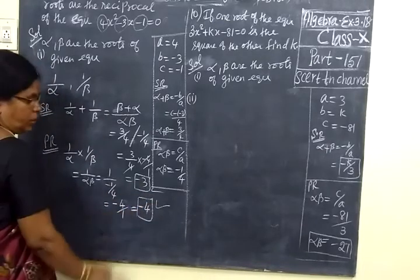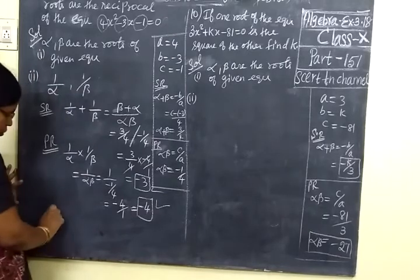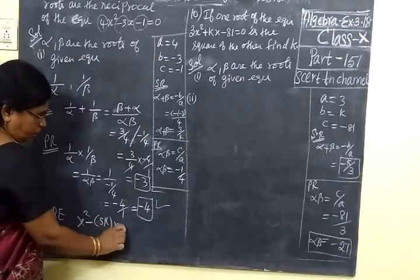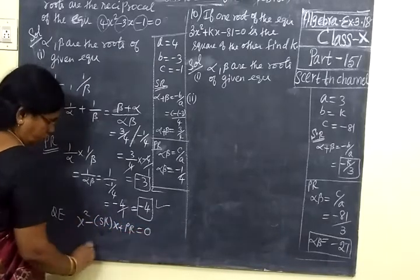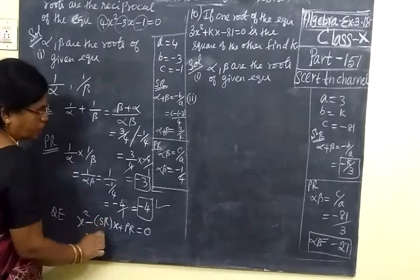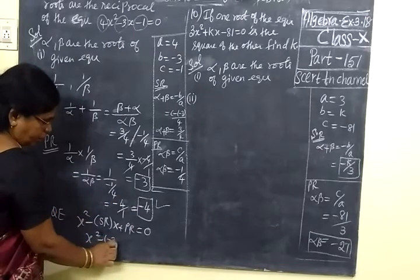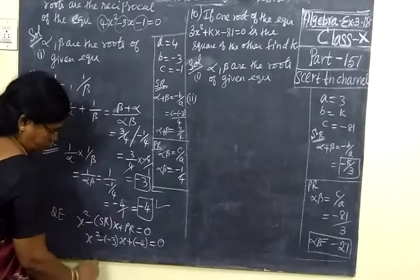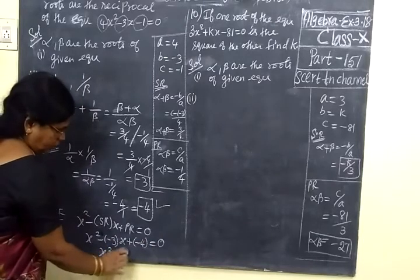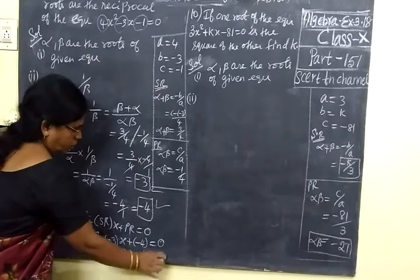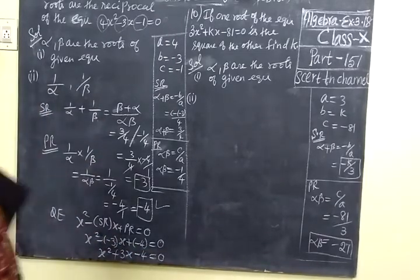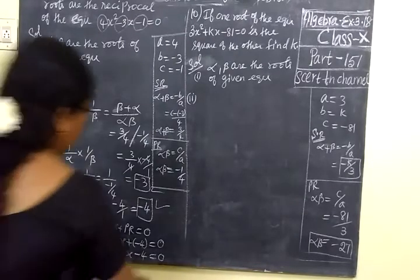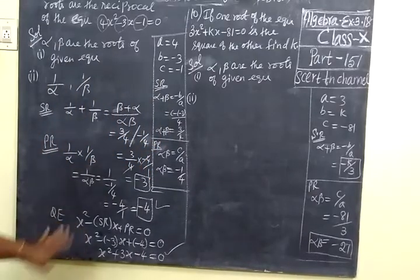Sum of the roots is minus 3, product of the roots is minus 4. Using the general quadratic formula: x squared minus (sum of roots)x plus (product of roots) equal to 0. Substituting gives x squared minus minus 3x plus minus 4 equal to 0, which simplifies to x squared plus 3x minus 4 equal to 0. This is the answer for the 9th sum.